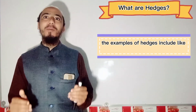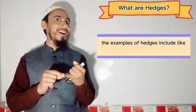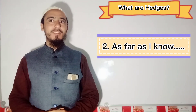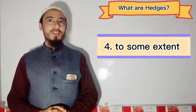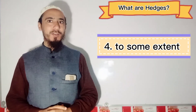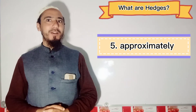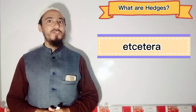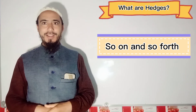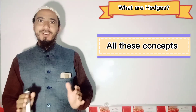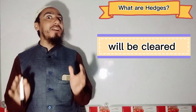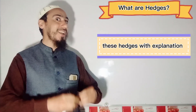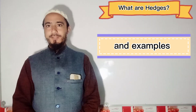The examples of hedges include: 'like', 'I think', 'as far as I know', 'sort of', 'to some extent', 'approximately', 'possibly', and so on. All these concepts will be clear when I provide these hedges with explanation, clarification, and examples.